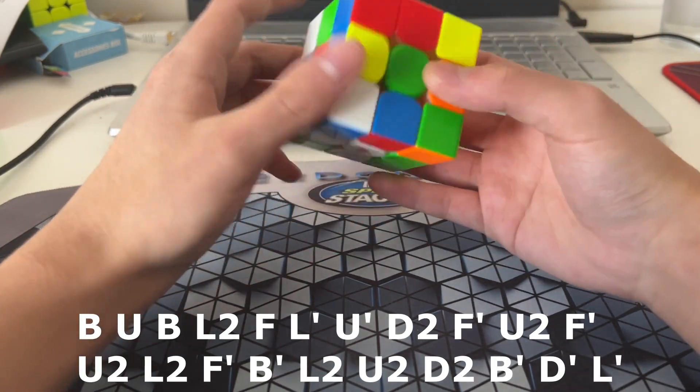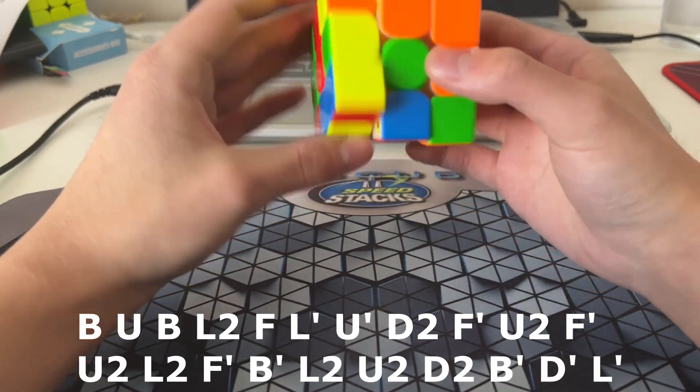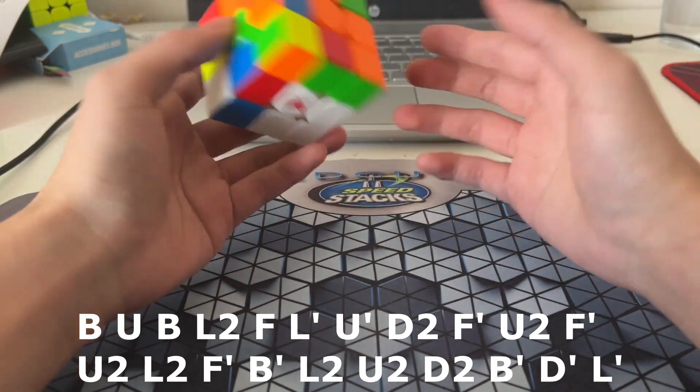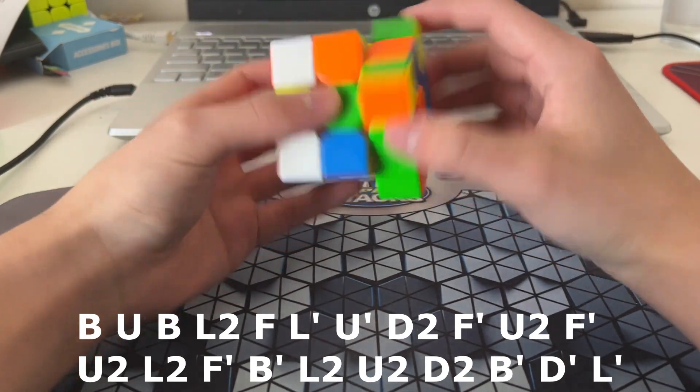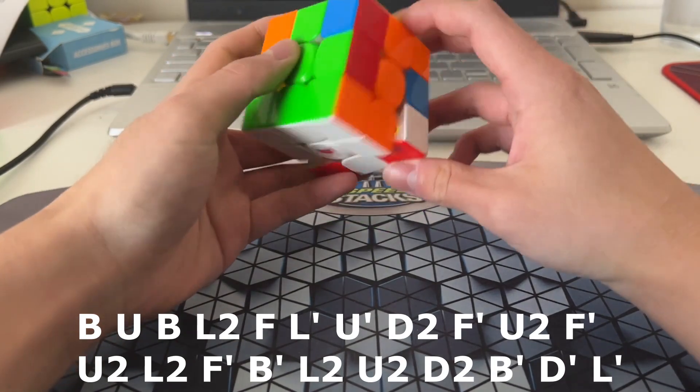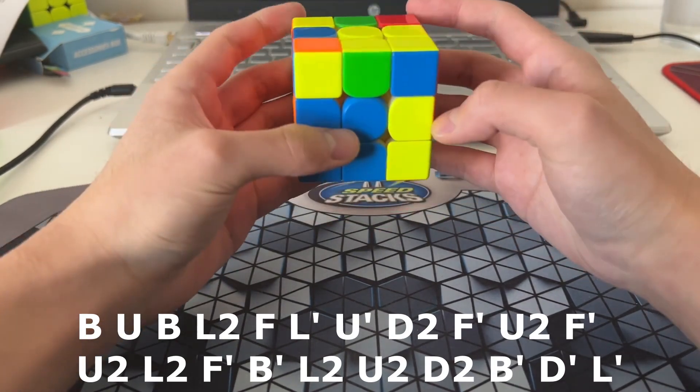So instead of just doing an L-prime to fix this, I'll do a UL to move out of the way. And solve that edge. I didn't even realize that, but... Then I'll solve this. And then, solve this free pair.